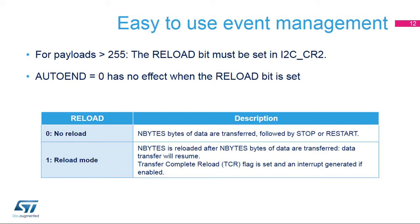When the payload is greater than 255 bytes, the reload bit must be set in I2C control register 2. In this case, the transfer complete reload or TCR flag is set after the programmed number of bytes has been transferred. The additional number of bytes to be transferred is programmed when the TCR bit is set, and then the data transfer will resume. The I2C clock is stretched low as long as the TCR bit is set. The reload bit is used in master mode when the payload is greater than 255 bytes and in slave mode when slave byte control is enabled. When the reload bit is set, the auto end bit has no effect.